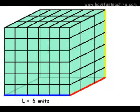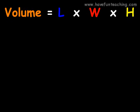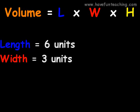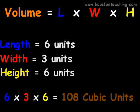Now that we have found the length, width, and height, we can find the volume of this three dimensional figure. Let's go to the drawing board! If you multiply the length times the width times the height, you will get the volume of a figure. The length equals six units, the width equals three units, and the height equals six units. Six times three times six equals one hundred and eight cubic units. We did it!